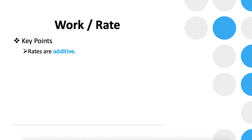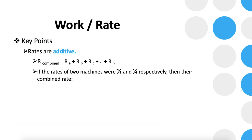The next key point is that rates are additive. If multiple machines are working simultaneously at their respective constant rates, the combined rate equals the sum of their individual rates — rate of A plus rate of B, up to rate of N. For example, if two machines have rates of 1/2 and 1/4 units per hour, their combined rate is 1/2 + 1/4 = 3/4 units per hour.